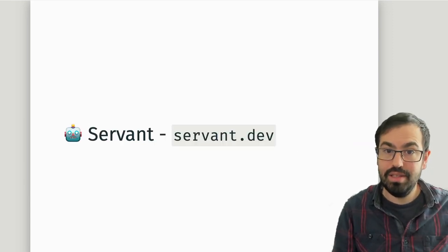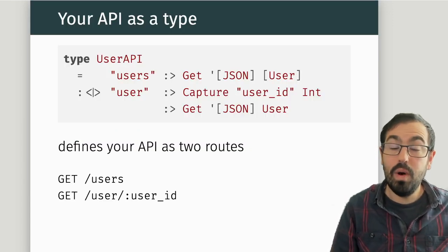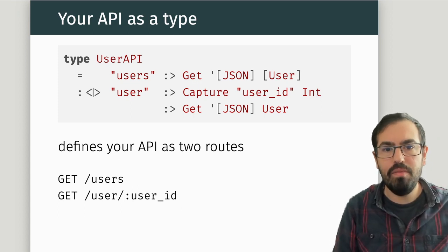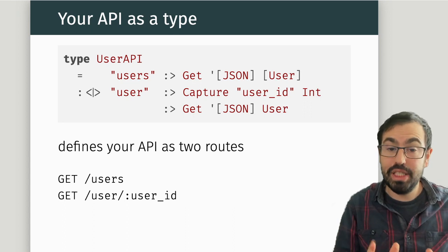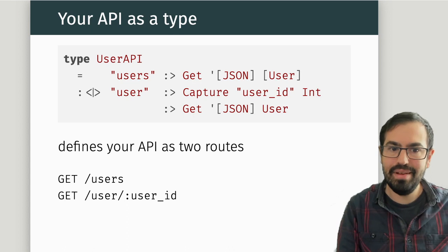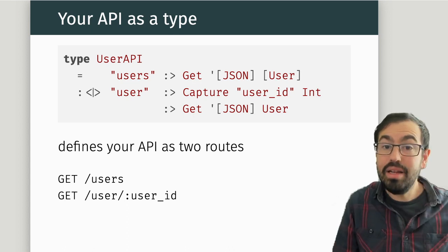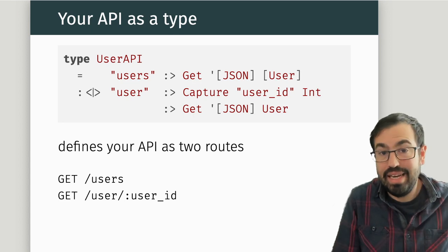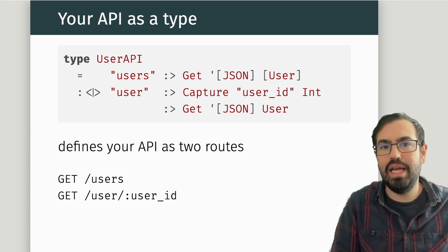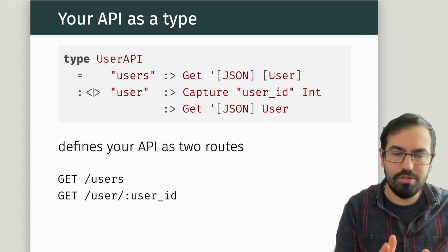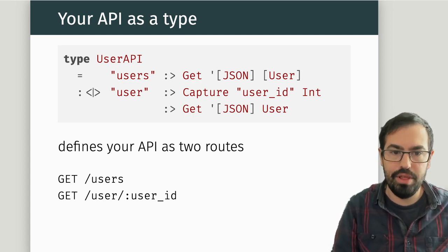Servant was very innovative when it came out, because it has this idea of being able to represent your whole REST API using a type. Right now, we're growing used to it — it might sound natural — but when it first came out, I found this to be a very interesting and different approach to what was out there.